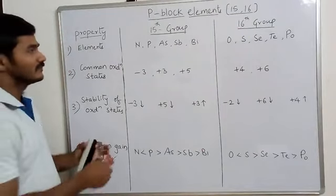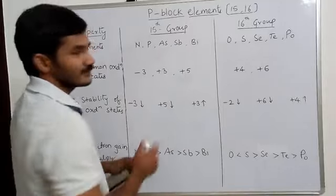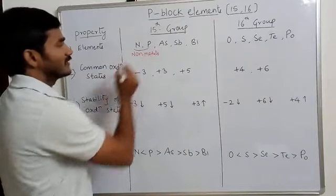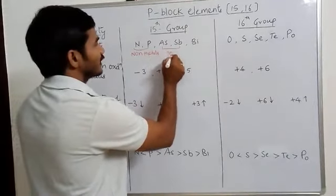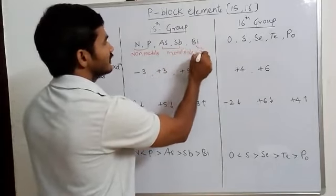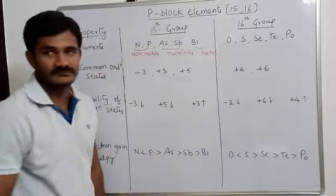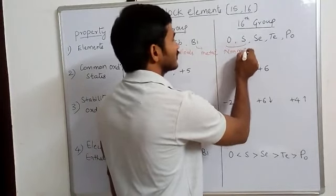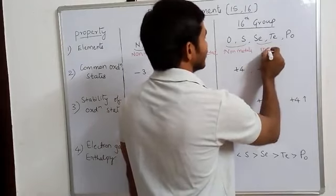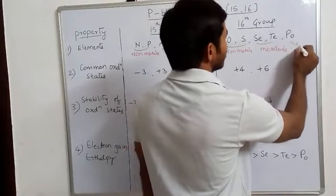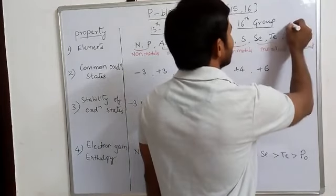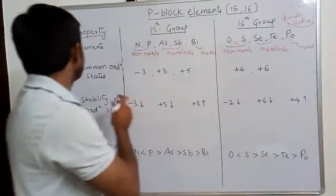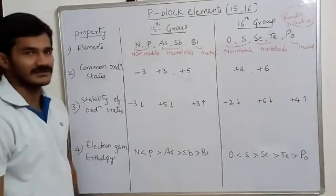The elements in the 15th group are nitrogen, phosphorus, arsenic, antimony, and bismuth. Nitrogen and phosphorus are non-metals, arsenic and antimony are metalloids, and bismuth is a typical metal. In the 16th group, oxygen and sulfur are non-metals, selenium and tellurium are metalloids, and polonium is a radioactive metal.